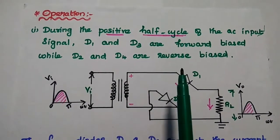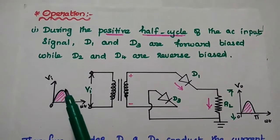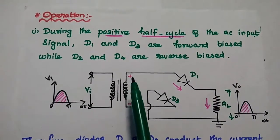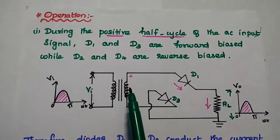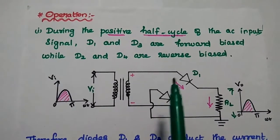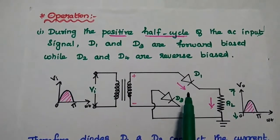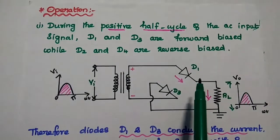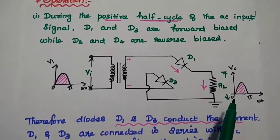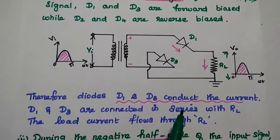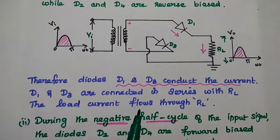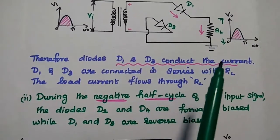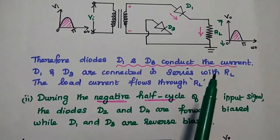The operation of bridge rectifier: first we consider the positive half cycle of the AC input signal. During the positive half cycle, the secondary has the same polarities. At that time, D1 and D3 are forward biased and D2 and D4 are reverse biased — meaning both are in off condition. There is a current flow through D1 and D3 in the same direction. During the positive half cycle, D1 and D3 conduct and both are connected in series with the load resistance, so load current flows through RL.